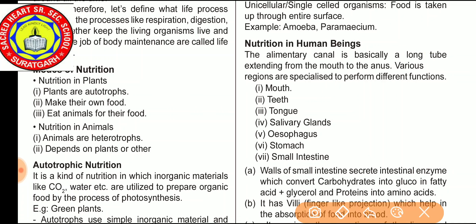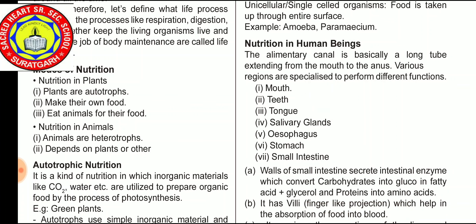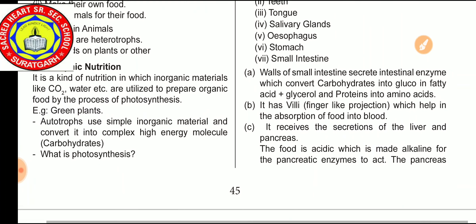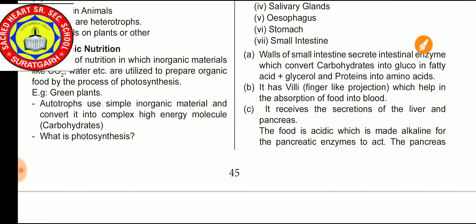The alimentary canal is basically a long tube extending from the mouth to the anus. The wall of the small intestine secretes intestinal enzymes which convert carbohydrates into glucose, fats into fatty acids and glycerol, and proteins into amino acids.